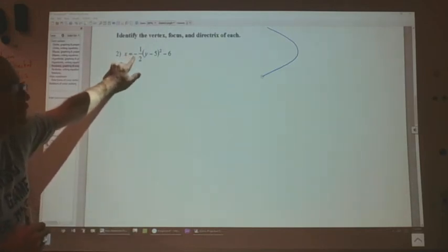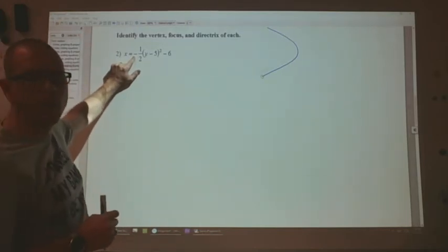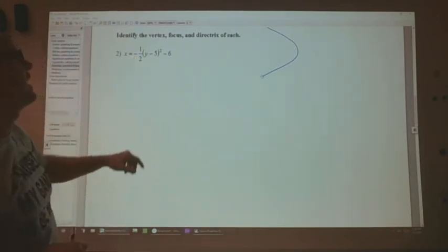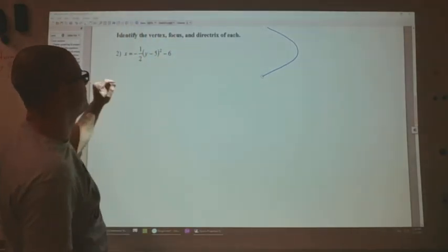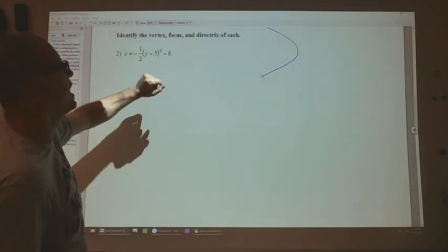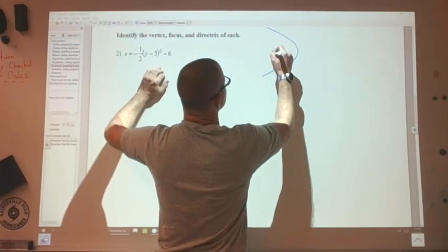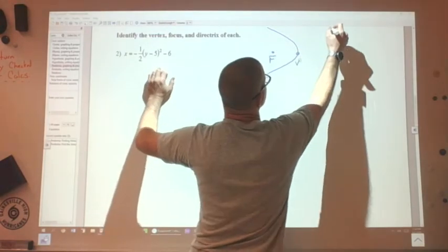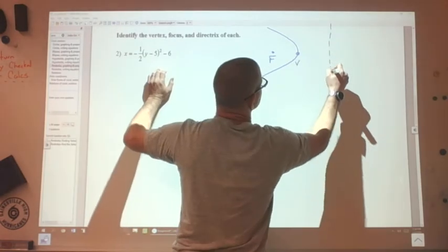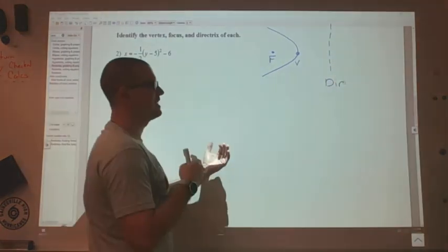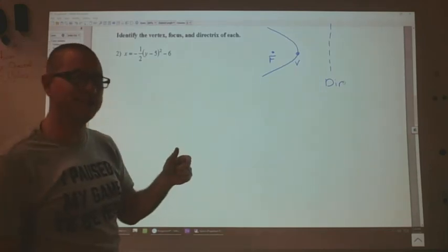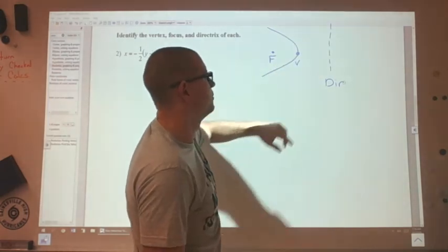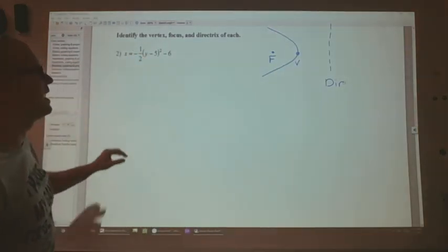So just like with parabolas, it opens up if it is positive, down if it is negative. x values are positive to the right, negative to the left. So we have that. Now we have this. I know my focal point will be in here. My vertex is there, and the directrix will be right there. That's the alignment of these features. Focal point inside the parabola's curve, directrix outside the parabola's curve. Vertex, we are familiar with right on the apex of that curve.